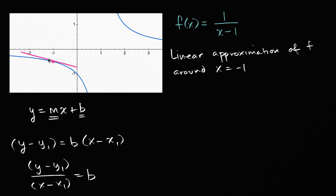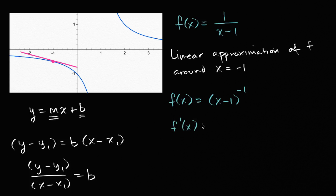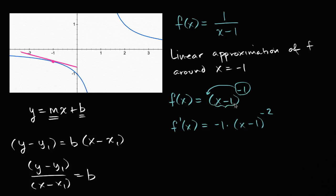Let's first find the slope of the tangent line — that's where the derivative is useful. I'll write f(x) as x minus one to the negative one power, because that makes it clearer we can use the power rule and a bit of the chain rule. The derivative of f with respect to x: the derivative of (x minus one) to the negative one is negative one times (x minus one) to the negative two, multiplied by the derivative of x minus one with respect to x, which is just one.